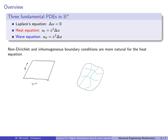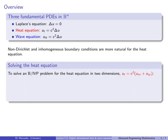You can Google Neumann boundary conditions wave equation and you'll get a ton of results, so I don't want to say these don't exist. I'm just saying that at least in an undergraduate class, I think it's more natural to have homogeneous Dirichlet conditions for the wave equation.